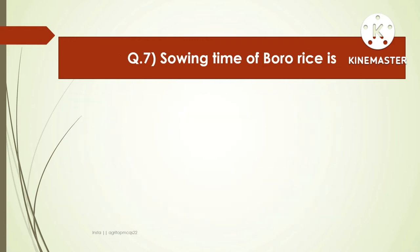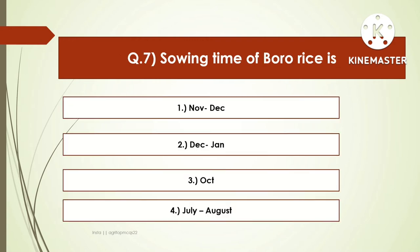The next question: the sowing time of Boro rice is — options are November-December, December-January, or October-July or August. The right answer is December-January. The sowing time of Boro rice is December and January.